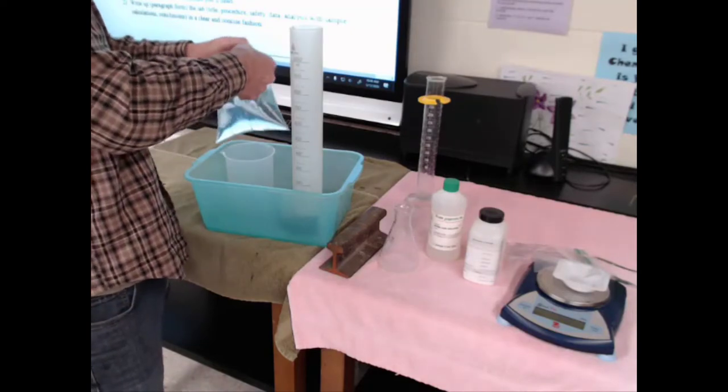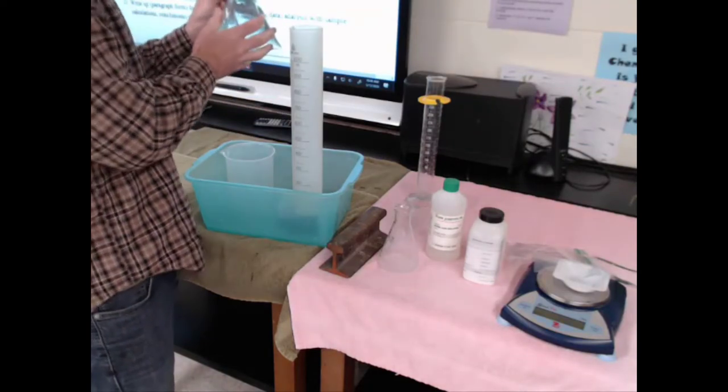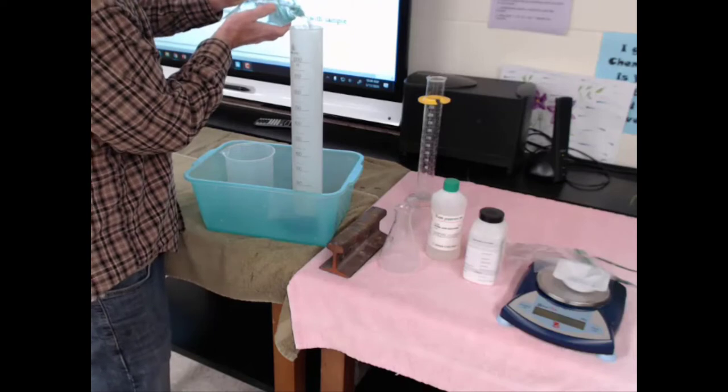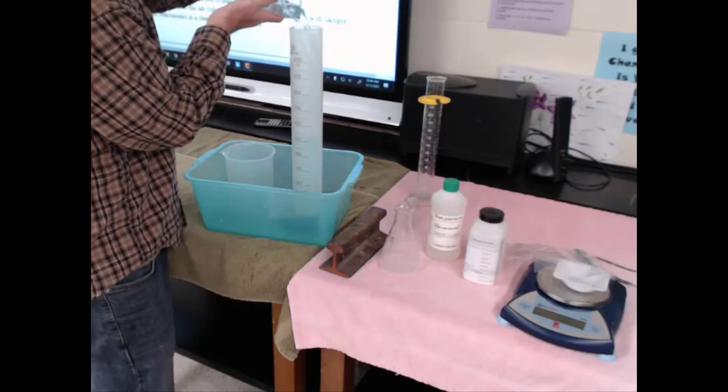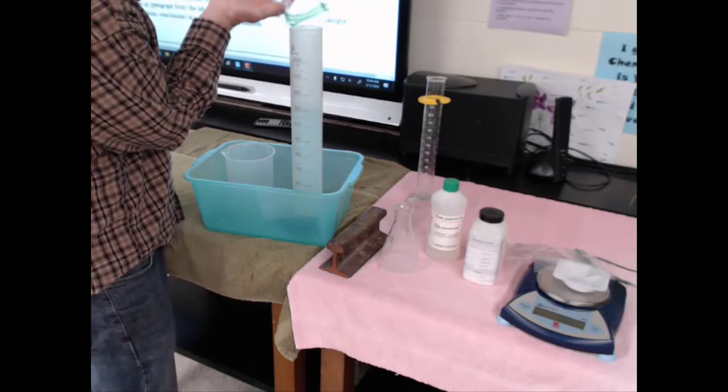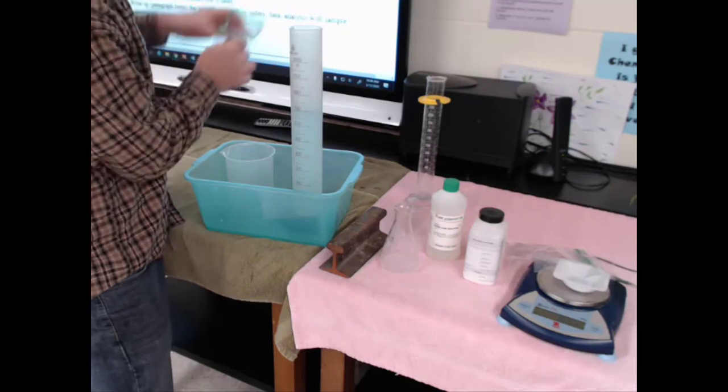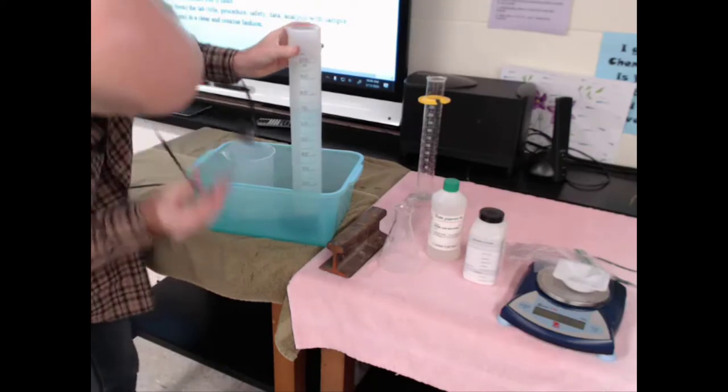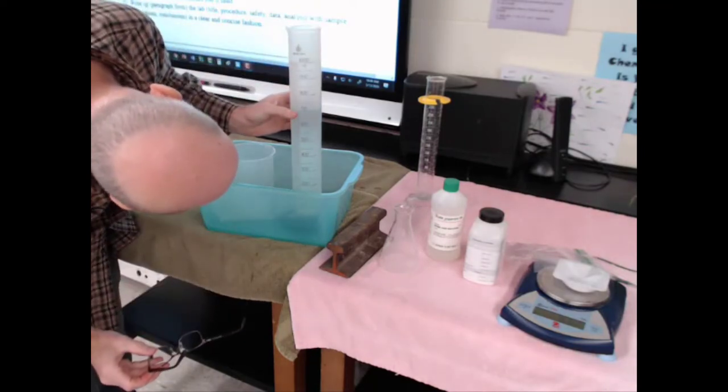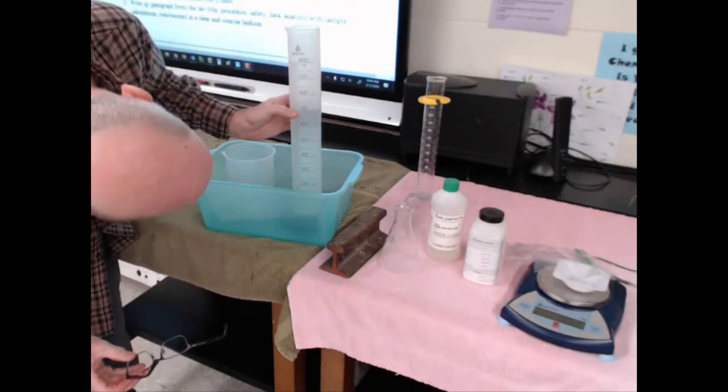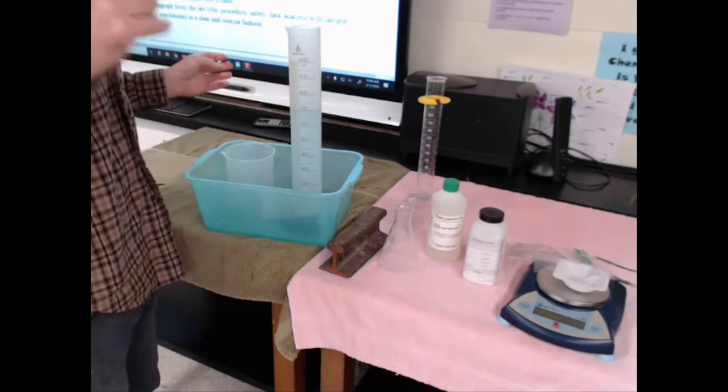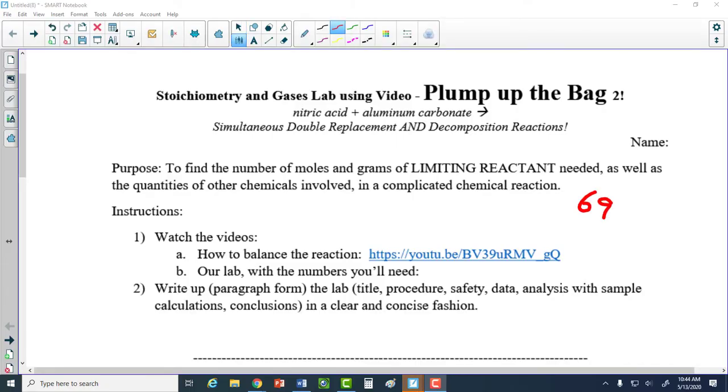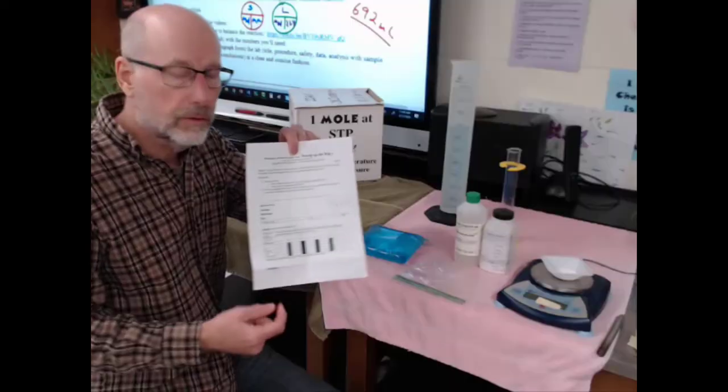Now I'm going to pour the water into the graduated cylinder without spilling a drop, and we'll see how much water was in there. That's how big the bag should be. It's about 690 - let me see, bottom of the meniscus: 692 milliliters. Write that down. 692 milliliters is how big the bag is.